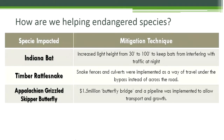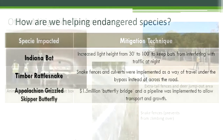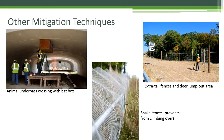So how are biologists and engineers helping endangered species along the Nelsonville bypass? Several mitigation techniques, or techniques that reduce threats to endangered species, have been put in place. For the Indiana bat, light poles were increased in height so there's less of a chance of bats being hit by cars. Snake fences deter snakes from traveling across the road and instead divert them to animal underpasses. The Appalachian grizzled skipper won't travel through dark tunnels, so a bridge was built with gaps between lanes to allow light to shine through and encourage the skippers to travel there. Animal underpasses, snake fences, and extra tall fences with deer jump-out areas help to protect native animals, especially endangered species.